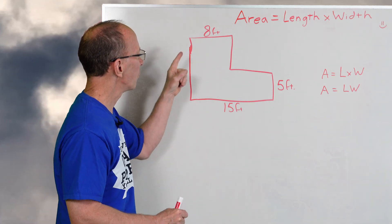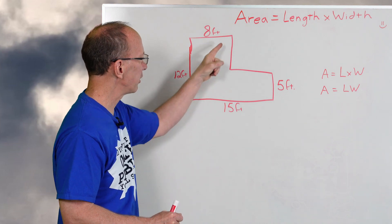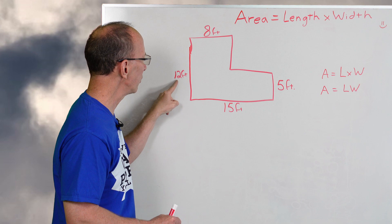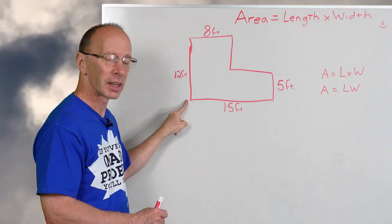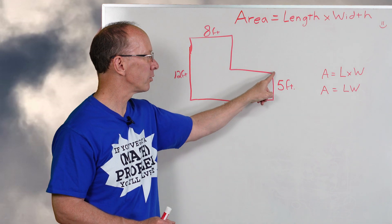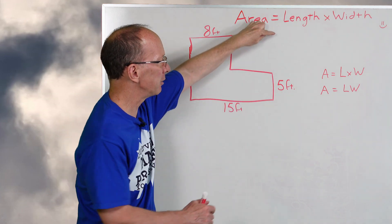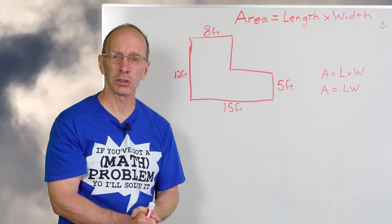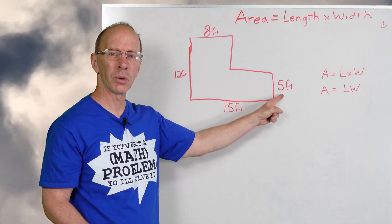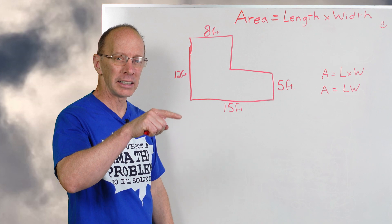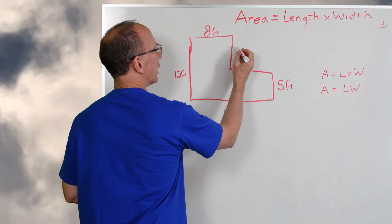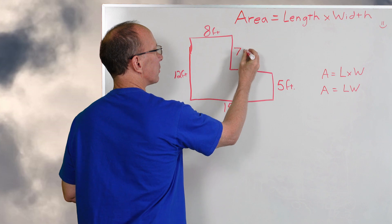Now what I would do is try to figure out these missing spots right here. I have 12 feet that go from here to there, and then I have 5 feet from here to there. I know from here to there, if I measured it, that's going to be 12. So what plus 5 would be 12? 7, 8, 9, 10, 11, 12 - 7 feet. So I'm going to go ahead and put 7 feet right here.